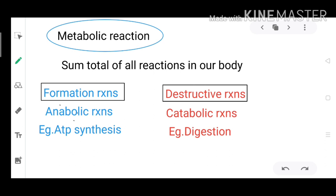They may be formation reactions or destruction reactions. Formation reactions are also known as anabolic reactions, and destructive reactions are known as catabolic reactions. Example of anabolic reactions is ATP synthesis, and catabolic reactions is digestion. All the formation and destructive reactions go hand in hand to achieve the function of metabolism.